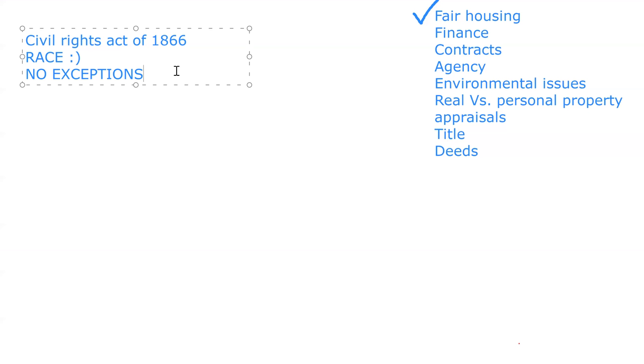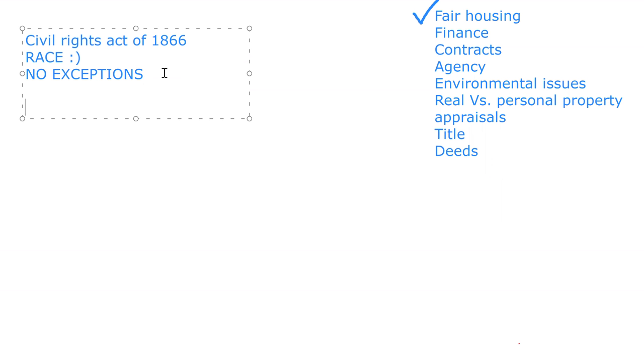Something to keep in mind if you're watching this in any of the 50 states: every single state has different fair housing laws at the state level. What I'm going to be referring to today is all the federal laws, all the national laws. There might be some state laws that are more encompassing and cover different things, so that's something to be cognizant of, because depending on what the question is asking you, that would dictate how you have to answer it. The Civil Rights Act of 1866 allows for no exceptions and protects the class of race.